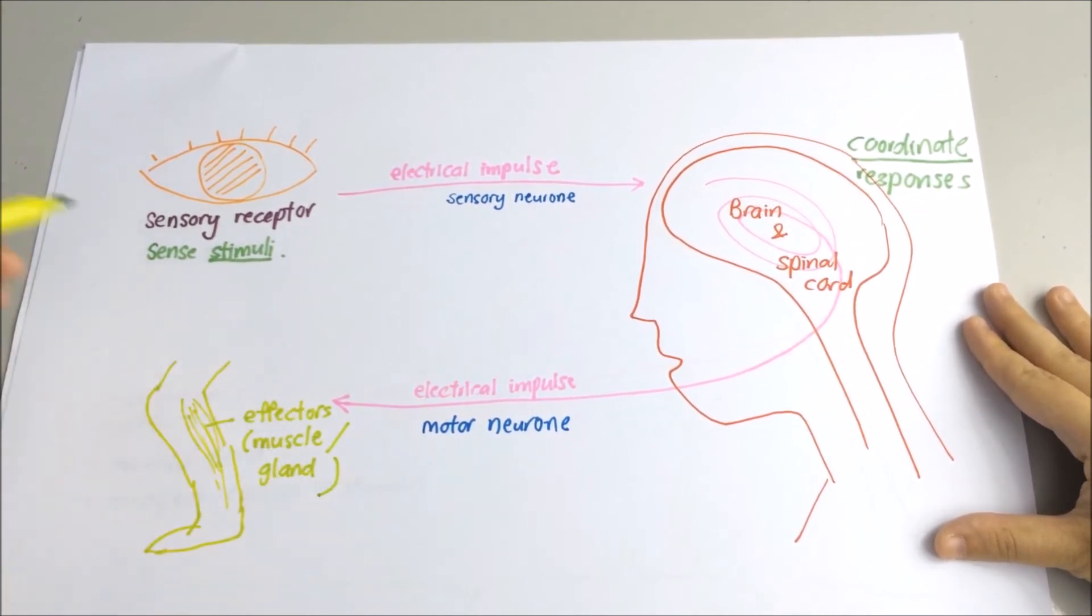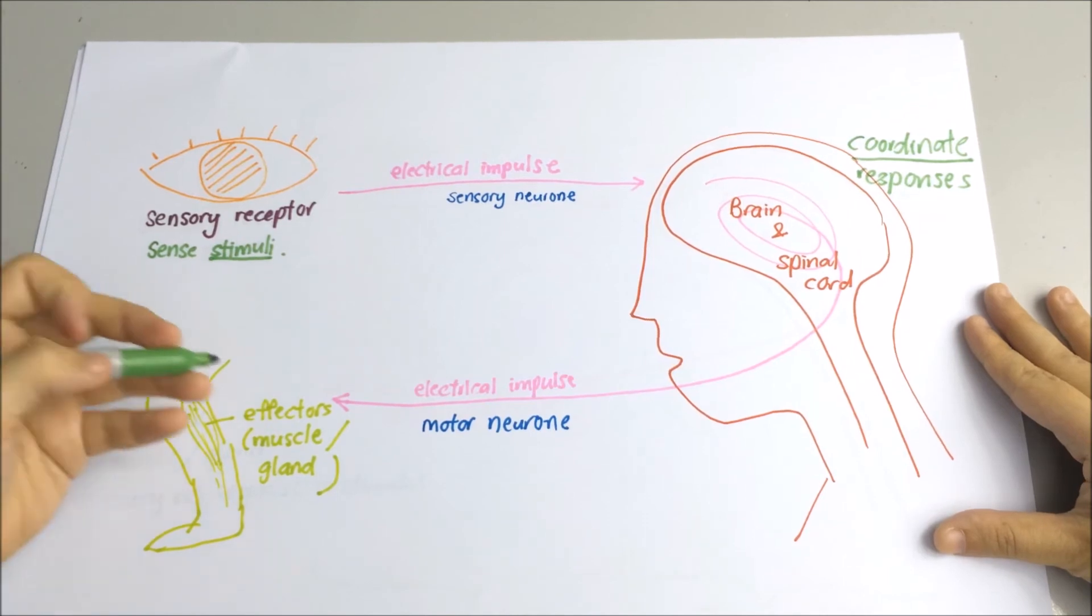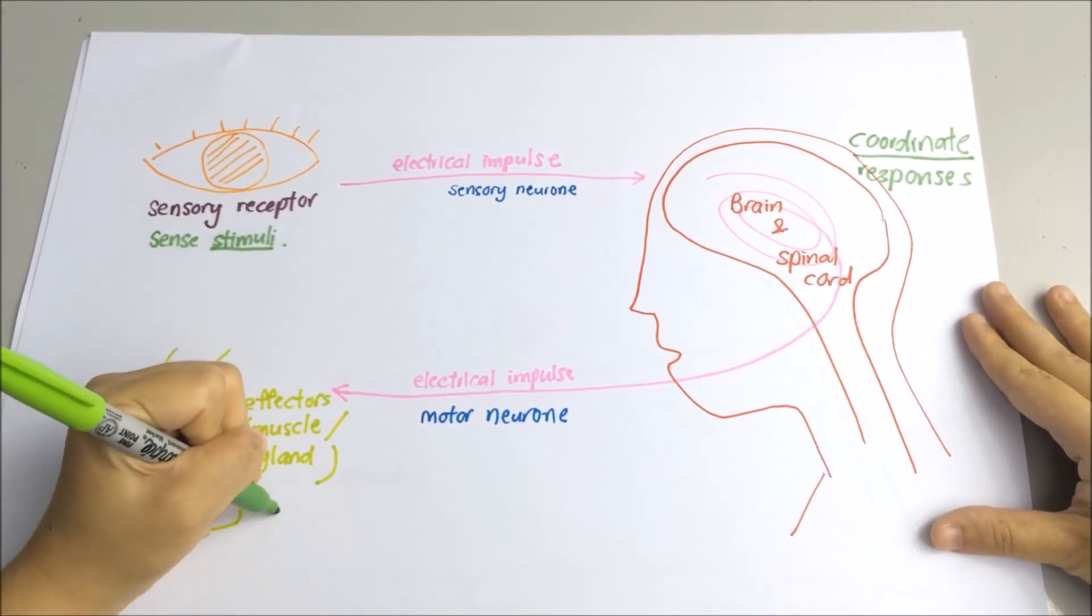So now, let me give you another example. If you accidentally touch a hot stove, the sensory receptors in the skin will catch the stimuli, telling you that, hey, this stove is hot.